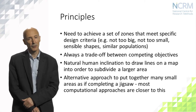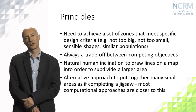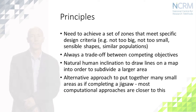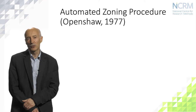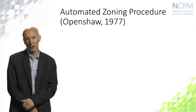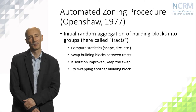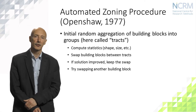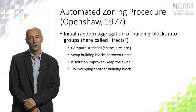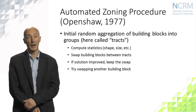An alternative approach is to put together many small areas as if completing a jigsaw. The computational approaches described here are much closer to that second analogy. These procedures are examples of methods which can be traced back to the automated zoning procedure introduced by Stan Openshaw in 1977. We take a set of small building block zones and aggregate them into groups, which from now on I'm going to call tracts.